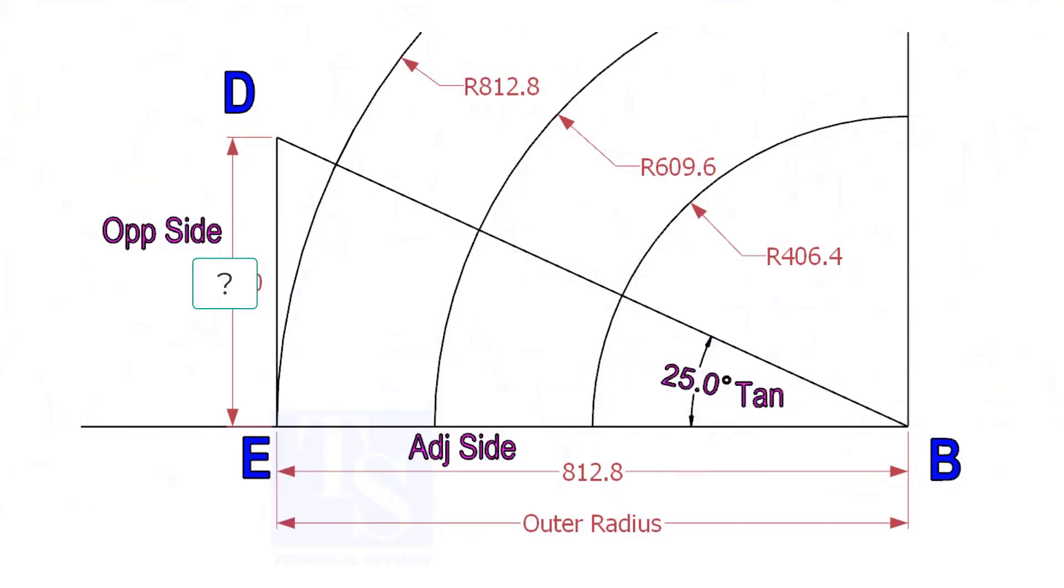Mark a line 25-degree rotated from the base line AB. To draw the line DB, we need to know the length of the line ED. To calculate ED, we need to apply the formula, tan-theta equals opposite side divided by adjacent side.